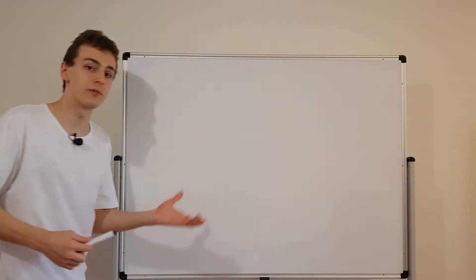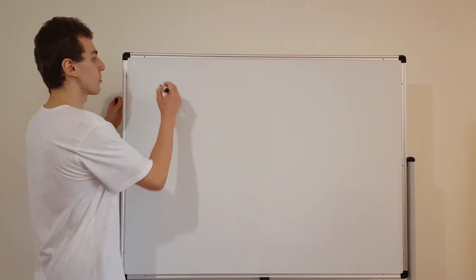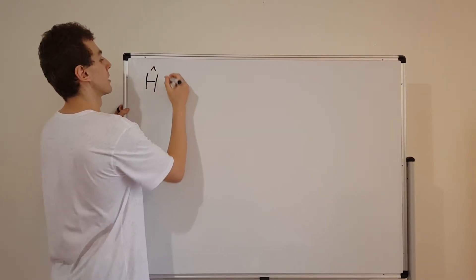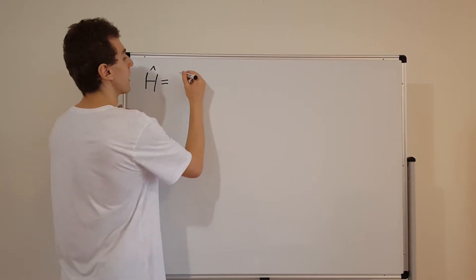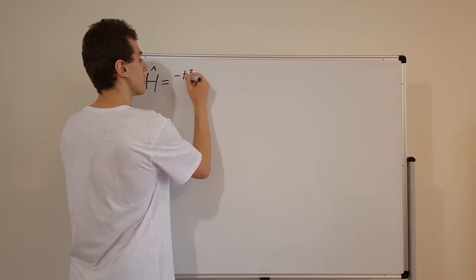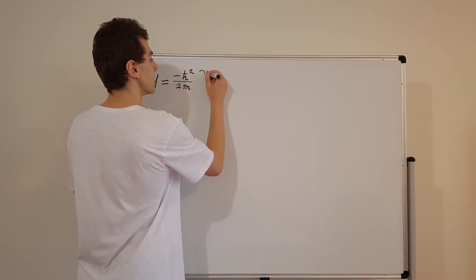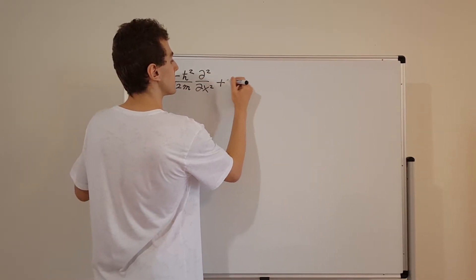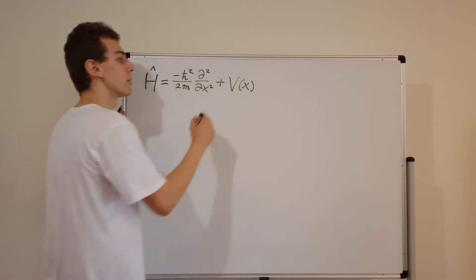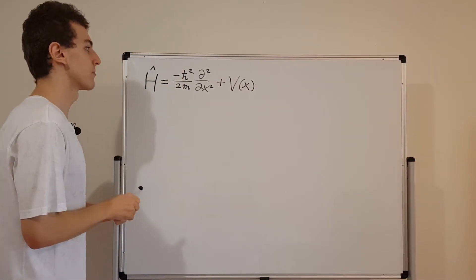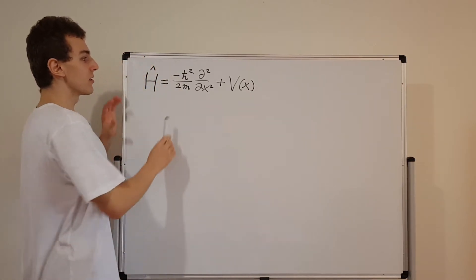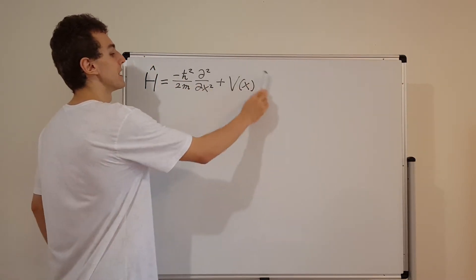First of all, let's write down the Hamiltonian operator as we saw in the previous video. The Hamiltonian operator, denoted by H with a little hat on top, is equivalent to minus h-bar squared over 2m times a second partial derivative with respect to x, plus the potential, which needs to be specified but is just a function of x. So this is the kinetic energy part, and this is the potential energy part.